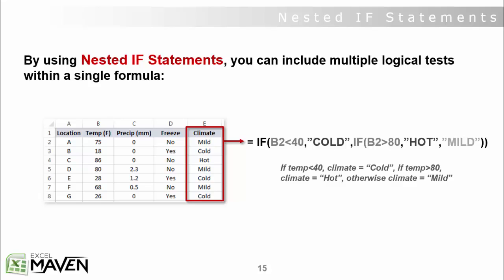So in this case, it's saying, alright, is B2 less than 40, yes or no? If it is, we're going to call it cold and stop there. If it's not, we're going to move to our next test.